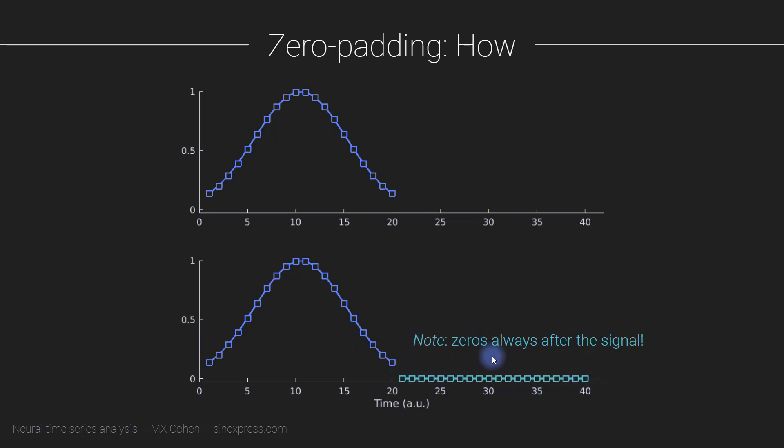This can be a little confusing because when I talk about time domain convolution in the next section of the course, we will discuss zero padding both before and after. With the FFT transform for zero padding for increased spectral resolution, you always zero pad afterwards. Fortunately, you generally don't do the zero padding manually, you let MATLAB do it for you in the FFT function.